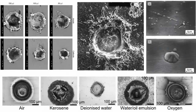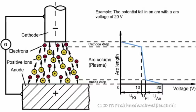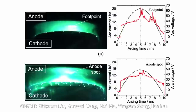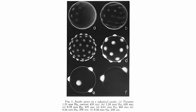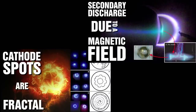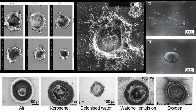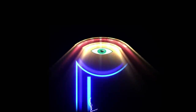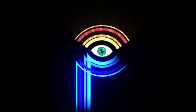Both anode and cathode spots can lead to crater formation. The most obvious difference is on which electrode the crater forms. Initially an anode or cathode spot forms, which might then create craters. These spots can be stationary or can move. We have previously examined cathode spots in two separate videos. So what exactly are the differences compared to anode spots and craters? Let's dive in and find out more.